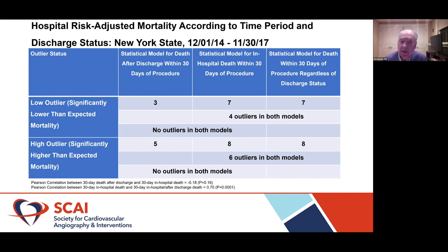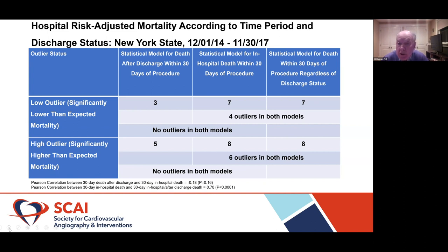Out of those 10 hospitals, only four of them were in common for the two measures. For high outliers, there were a total of 10 unique hospitals identified as a high outlier, and of those 10, only six were in common. So there's quite a difference in terms of which measure you use when assessing hospital quality. It's important to take a look at these two different measures and try to get to the bottom of how they differ and which one should be used — or whether they both should be used. It's not six of one, half dozen of another.